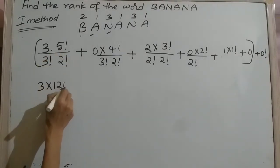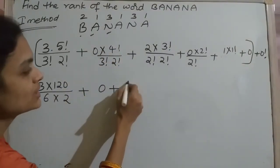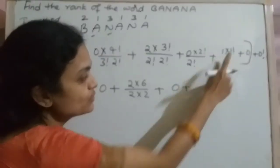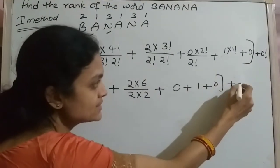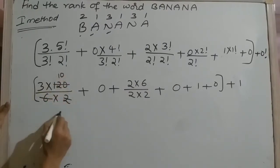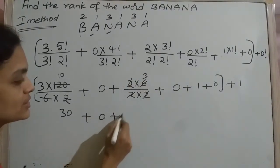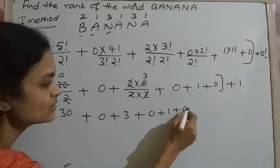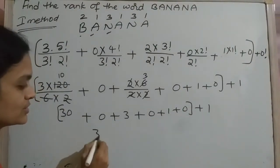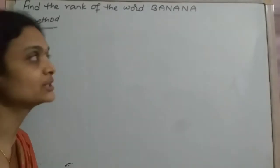Now simplify: 3 × 5! = 3 × 120 = 360, divided by 3! × 2! = 6 × 2 = 12. Zero terms drop out. Then 2 × 3! / (2! × 2!) and 1 × 1!/1. Simplifying: 360/12 = 30, then 3, then 1, then 1. So 30 + 3 + 1 + 0 + 1 = 35. The rank of BANANA is 35. This completes the first method.